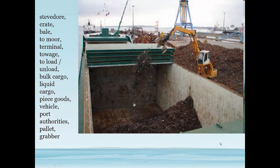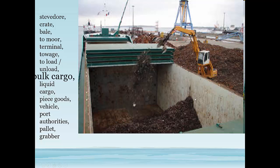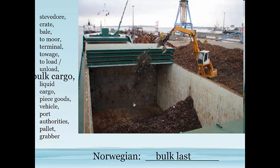Here we have the complete opposite — dry cargo that doesn't come in a container but is loose: either granules, grains, or rocks. It's not one solid piece, so it's not piece goods. What do you call this type of cargo that's loose and dry? It's called bulk cargo. You have ships made to carry just this particular type of cargo. Many different types of bulk cargoes — coal, rice, grain — are loaded directly into the hold and then pulled out again. In Norwegian, last is the word for cargo, so you say bulk last.